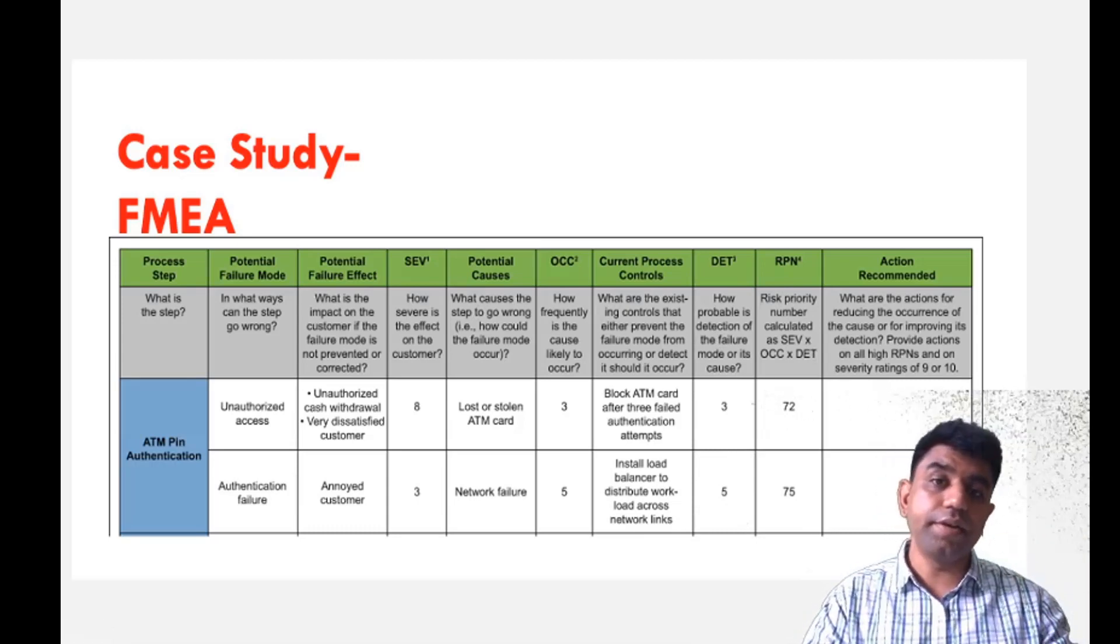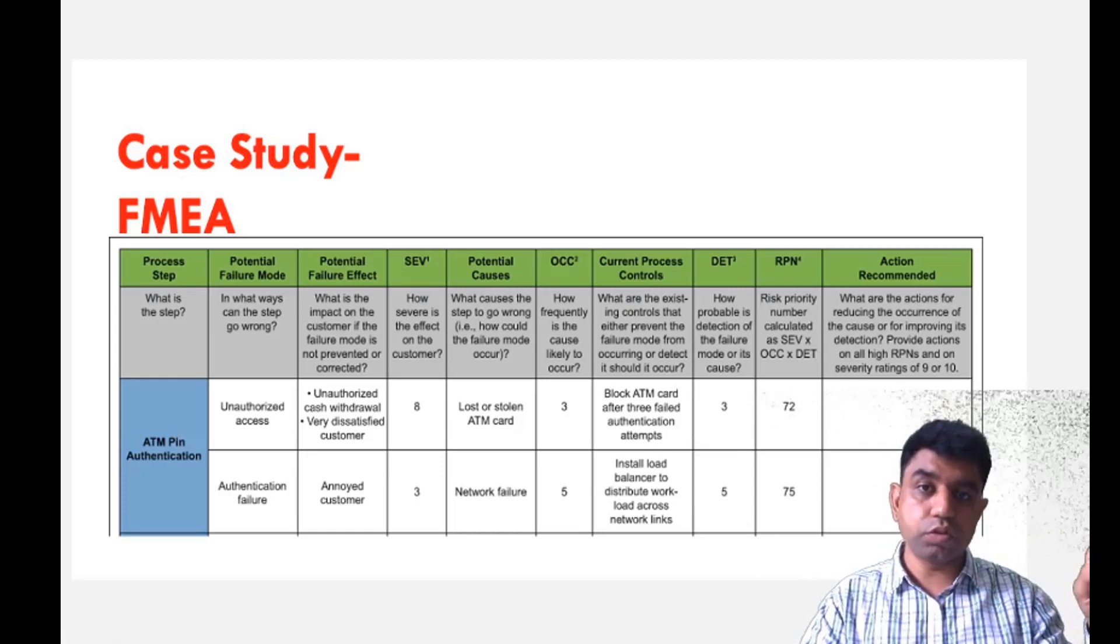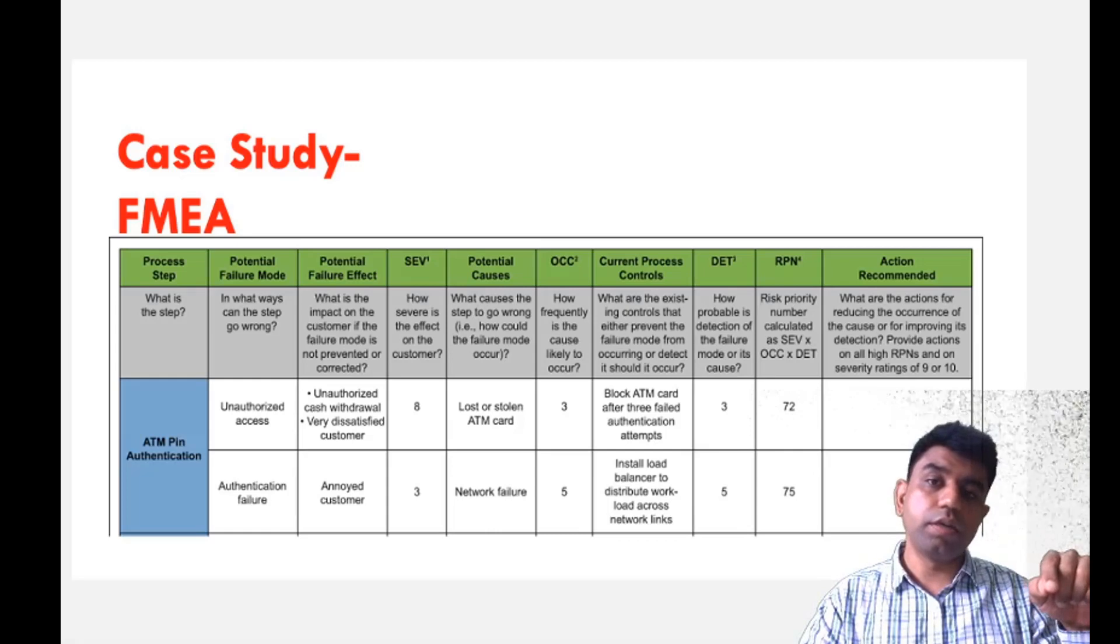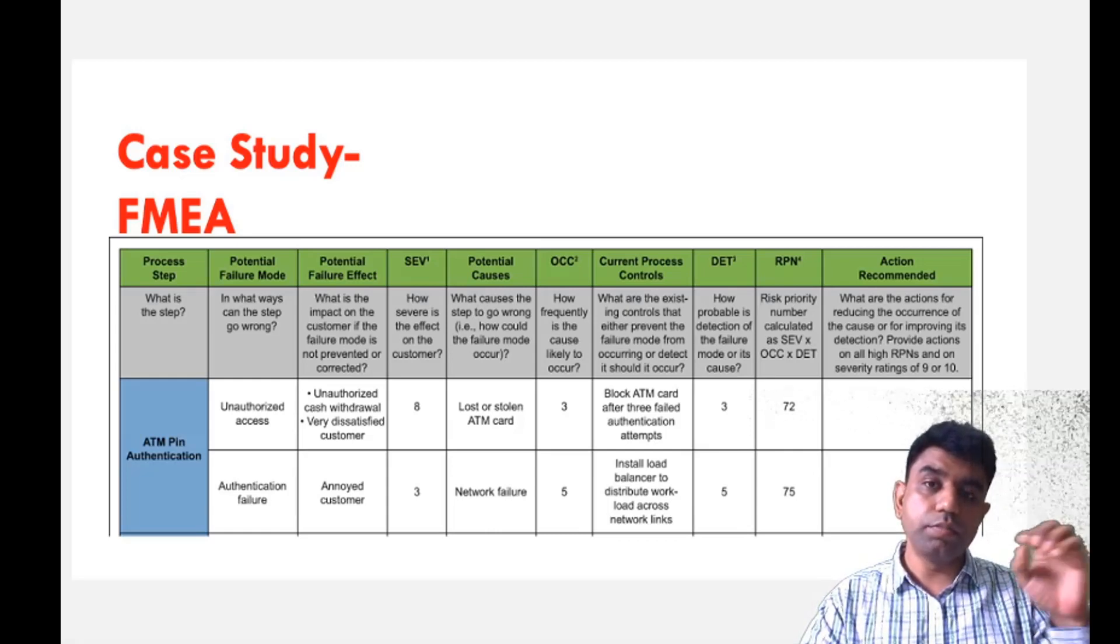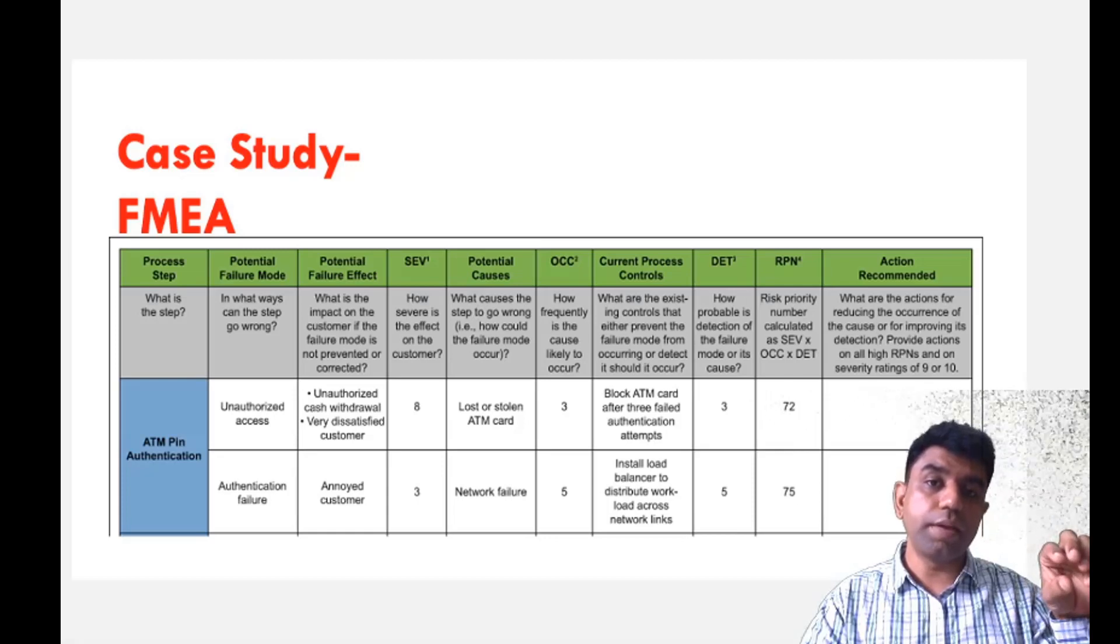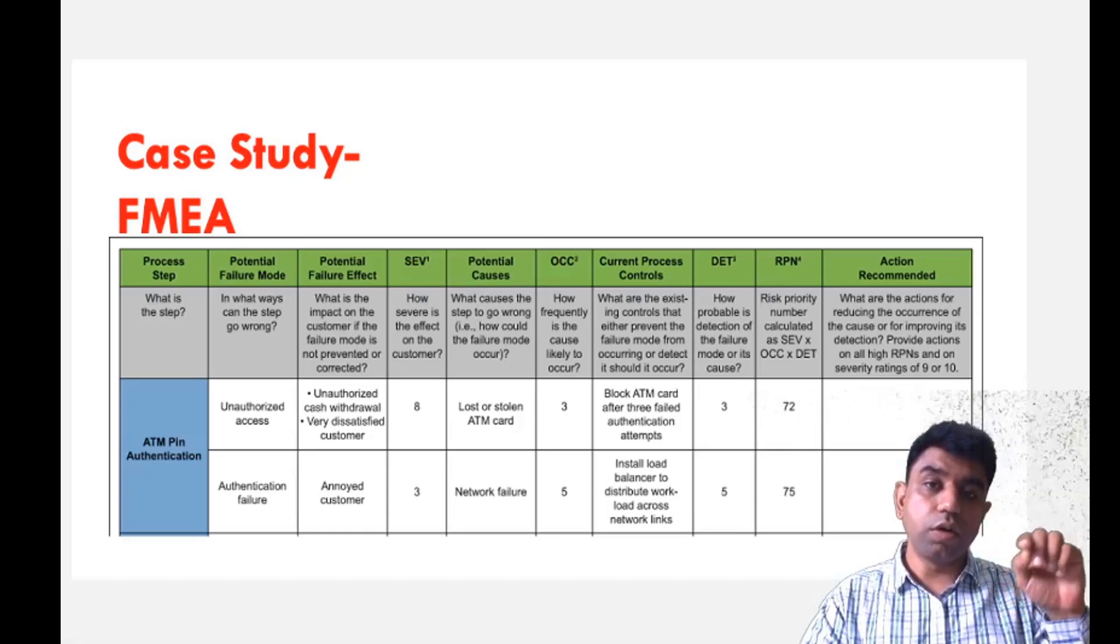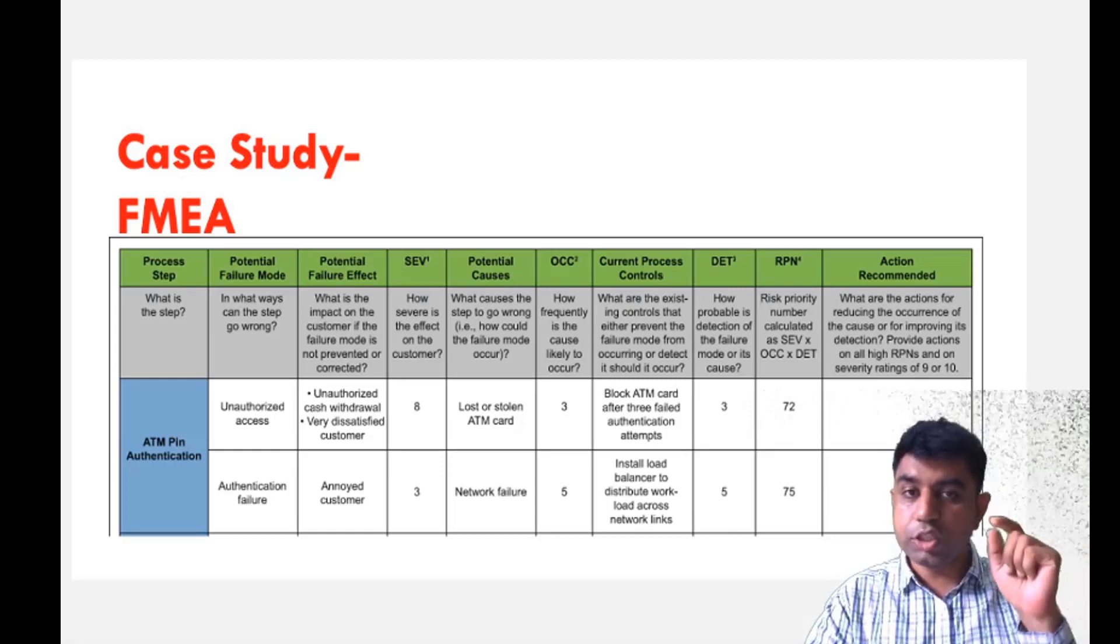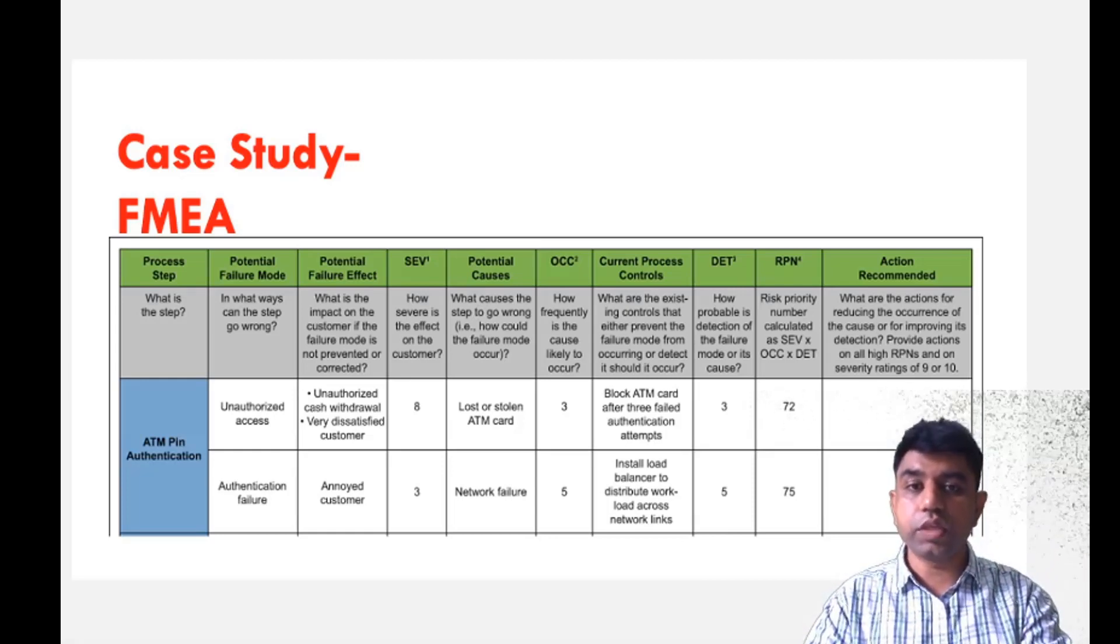Based on detection rank, they find out the risk priority number. For each and every event and process of manufacturing, we give this kind of risk priority number. So we can know if this thing happens, it can have this much damage. That's why quality of this particular thing is required to be improved first. That judgment we get with the help of this FMEA study.